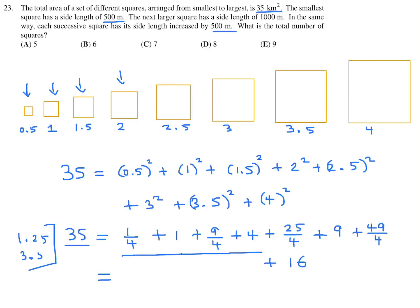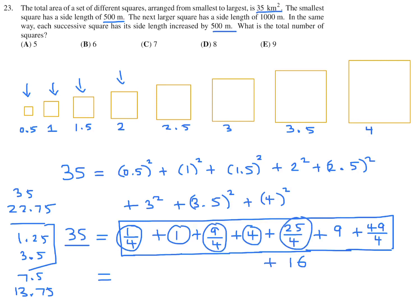We've got to keep going. Plus 25 over 4, which is 6.25. Now we're up to 13.75. Add 9, that brings us up to 22.75. Add 49 over 4, which is 12.25. And we hit exactly 35. So we don't need to worry about this 16 here. Just these squares total 35. So how many are there? 1, 2, 3, 4, 5, 6, 7. So it was basically these 7 squares that, when you add up the area, it equals 35 kilometers squared. So 7 is the answer to number 23, which is C.